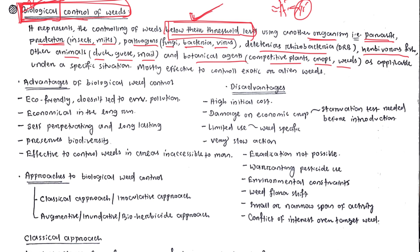The advantages of biological weed control: first, it is eco-friendly. If we use fossil fuel-powered machinery or herbicides, we pollute the environment with agrochemicals and synthetic products. But in biological weed control, we release certain bio-agents that do not pollute or contaminate the environment.